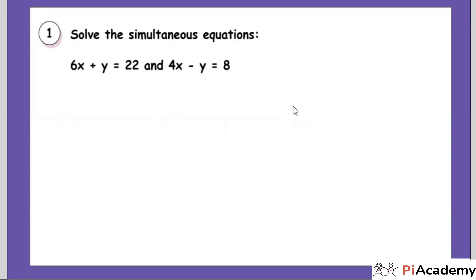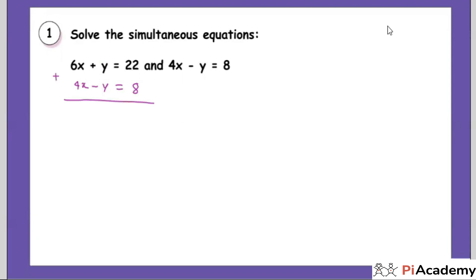Now I'm solving — you can observe my calculation. If you have any doubt it will get resolved. Look: 6x plus y equals 22, and 4x minus y equals 8. You can observe that y and y are there with the same coefficient — one and one — but opposite signs. Opposite sign: add them. So this y and this y will cancel. 6x plus 4x gives 10x.